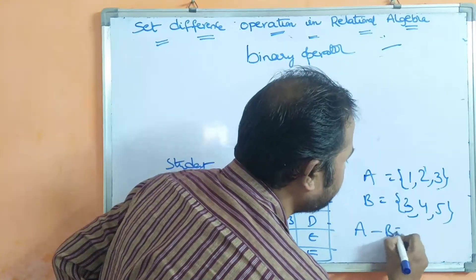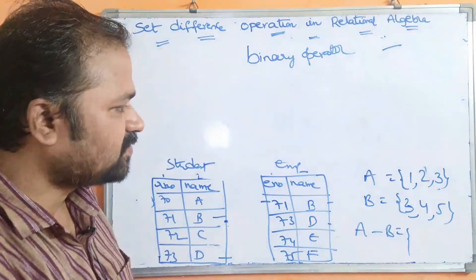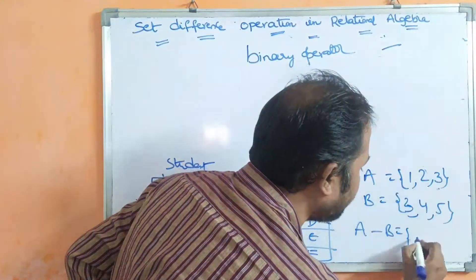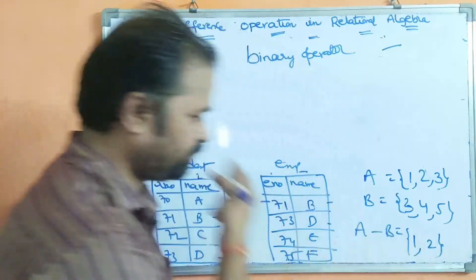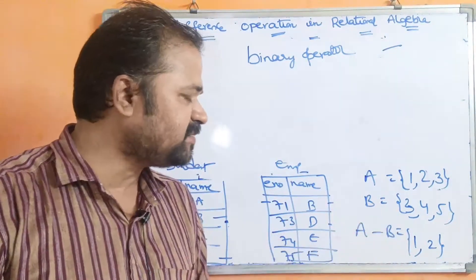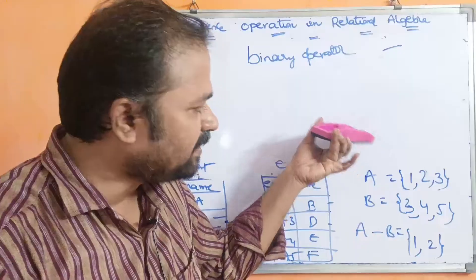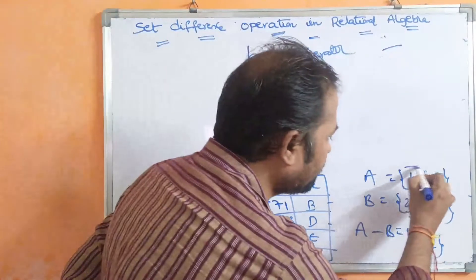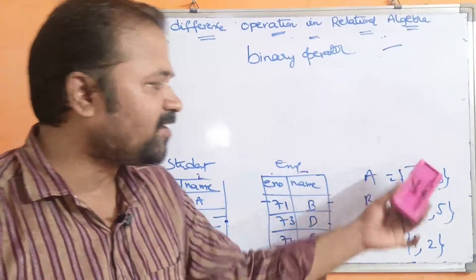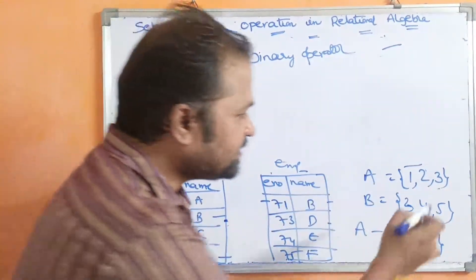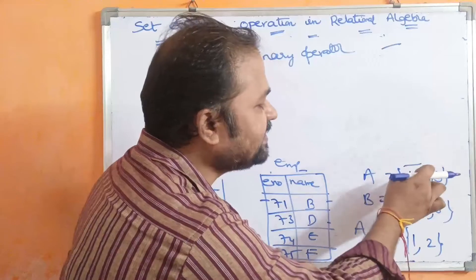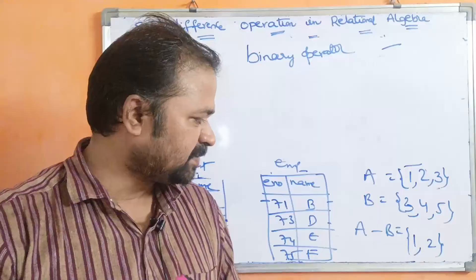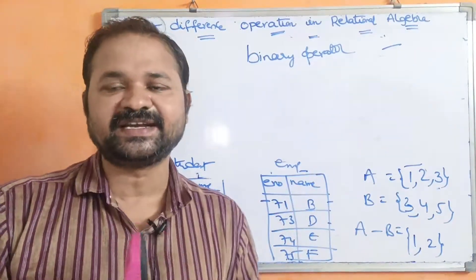So A minus B equals {1, 2, 3} minus {3, 4, 5}, which gives the result {1, 2}. A minus B means the set of elements which are in A but not in B. Elements 1 and 2 are in A but not in B. Whereas 3 is in A as well as in B, so we do not include 3. This is the basic idea behind the set difference operator.